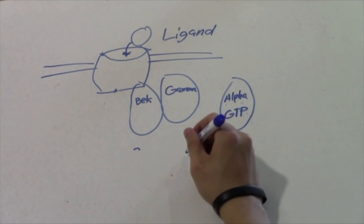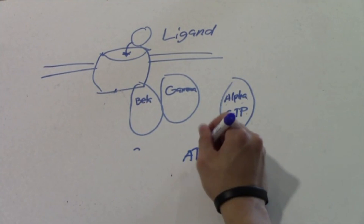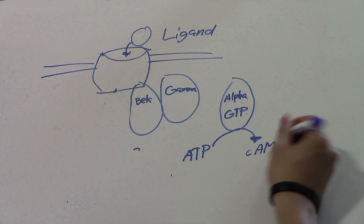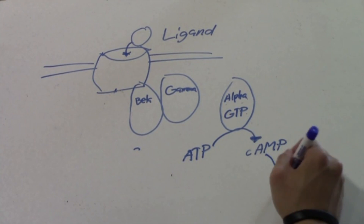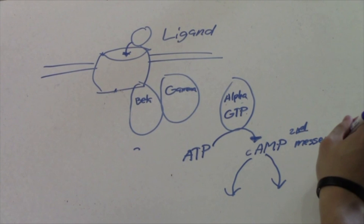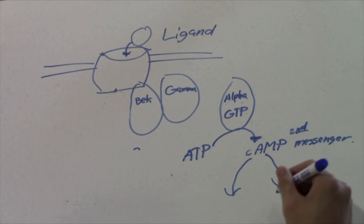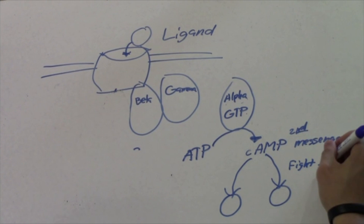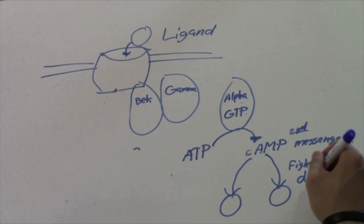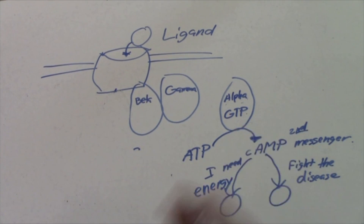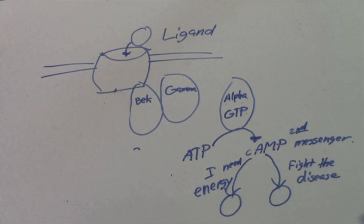When this happens, alpha-G is going to separate from the beta and gamma-G, and it's going to bring in this thing called adenylyl cyclase. This is going to convert ATP to a thing called cAMP as a second messenger. This is going to send different signals to different cells, and then it's going to communicate things like: I need to fight this disease, I need energy, or let's stop everything right now.